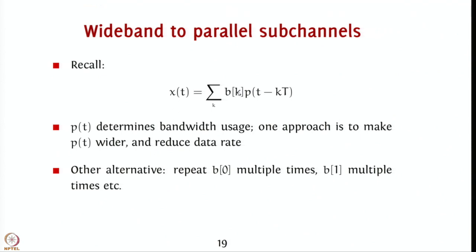The model for the transmit signal is x(t) = summation b_k * p(t - kT), where b_k are the symbols being transmitted and p(t - kT) is the effective pulse seen at the receiver. In some sense, it's the convolution of your transmit pulse along with the channel if any.